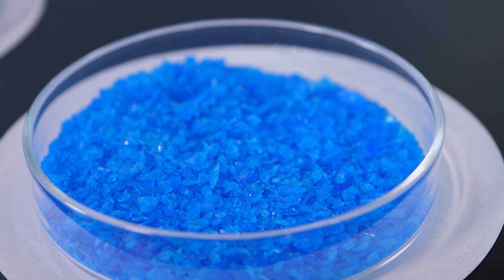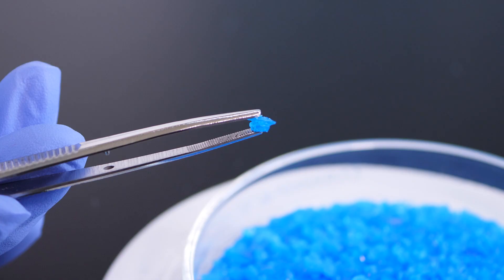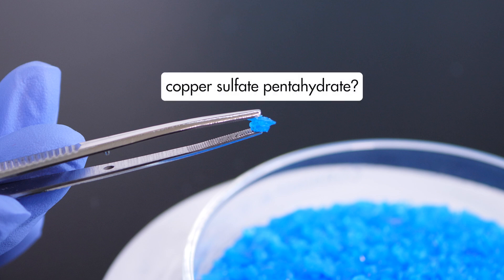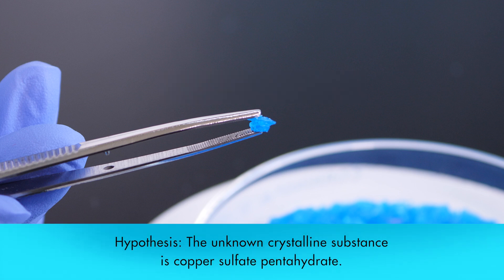During our research, experimentation, and observation, we found that the physical properties, such as color, solubility, pH, and density, of our unknown substance, closely match the properties of copper sulfate pentahydrate. Therefore, we can make our hypothesis, which is, the unknown crystalline substance is copper sulfate pentahydrate.